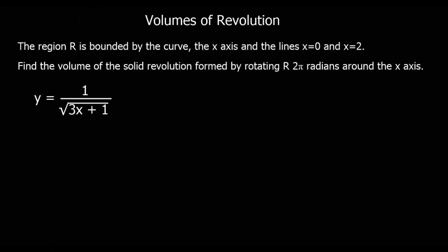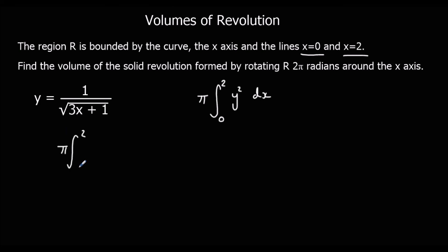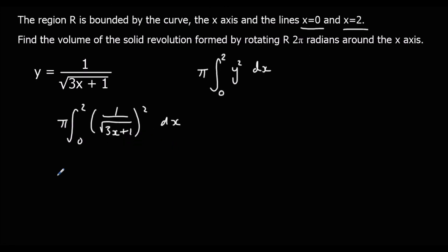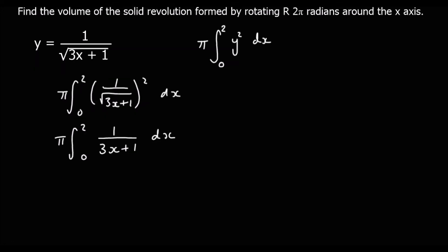One more question — pause the video, give this one a go, and press play when you're ready to go through the answer. Again, we've got π times the integral of y squared with respect to x, with limits 2 and 0. Here y is 1 over the square root of 3x plus 1, and squaring the top and bottom of the fraction gives us 1 over (3x plus 1).